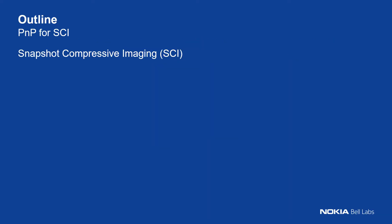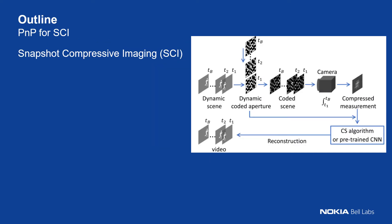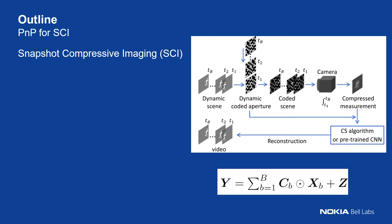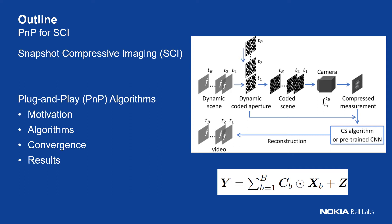Snapshot compressive imaging basically uses a 2D camera or 2D sensor to capture high-dimensional data. We use B different masks to modulate the scene, and each frame is modulated by a different mask. We integrate light to get a single measurement, then use compressive algorithms or convolutional networks to recover the video. We will talk about the PnP motivation, algorithm, convergence, and results.